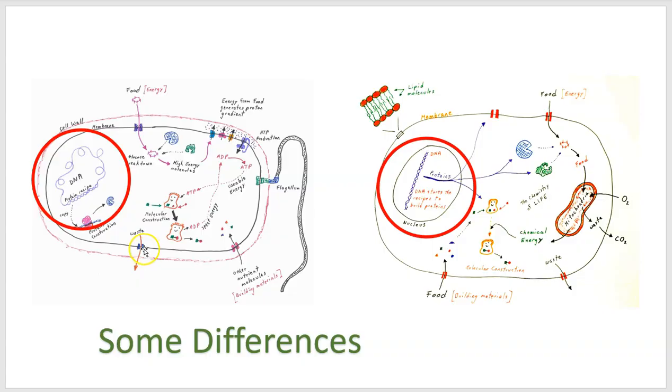Now, there are some differences, and let's start with the DNA differences. While both kinds of cells have DNA, in bacteria the DNA is just in the cytoplasm. There's no membrane around the DNA, whereas in a complex cell - amoeba, paramecia, or an animal cell - there is a nuclear membrane.